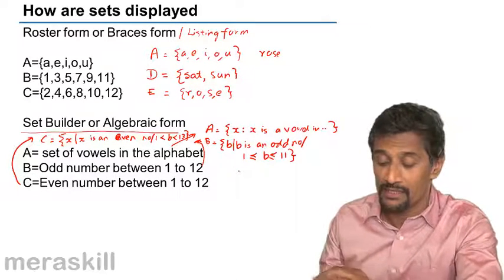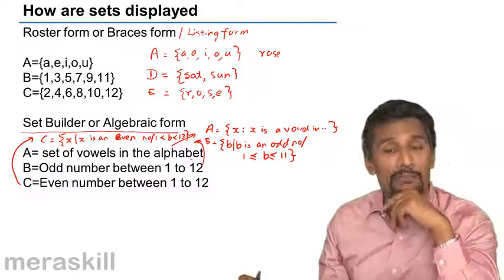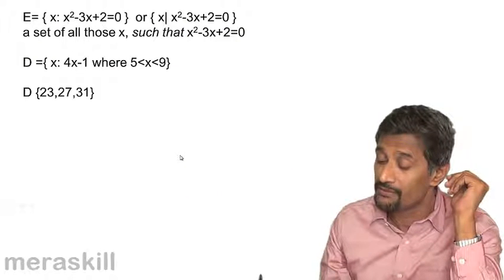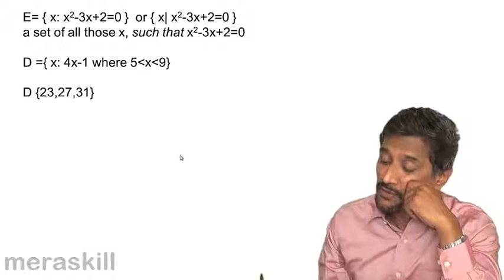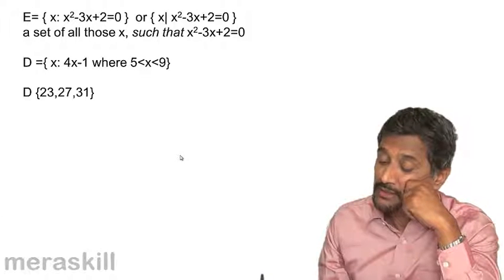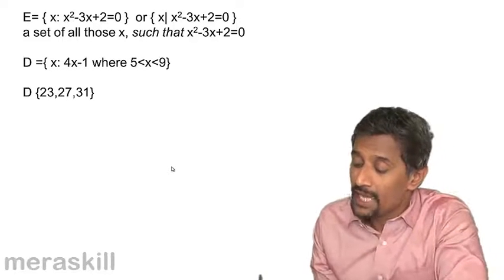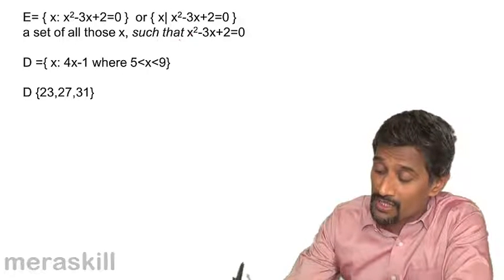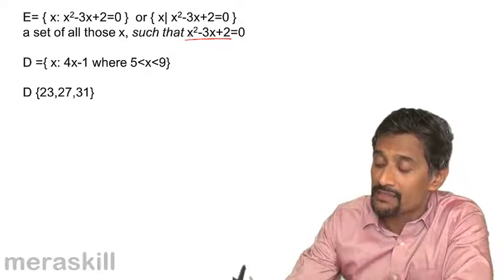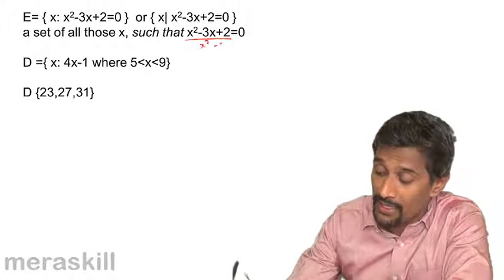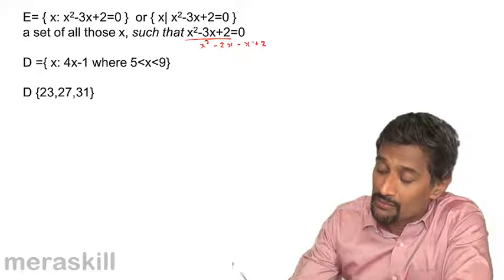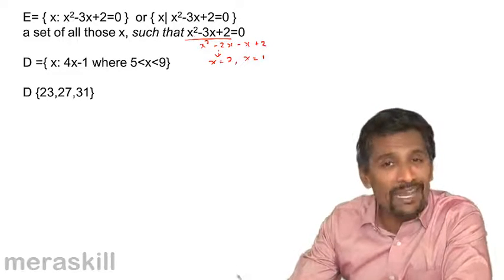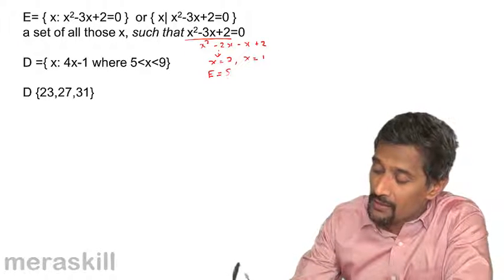So those are the two ways: the listing method and the set-builder or algebraic form. For example, E is the set of all X such that X² - 3X + 2 = 0. To find the elements, you solve the equation. Factoring gives X² - 2X - X + 2 = 0, which yields X = 2 or X = 1. So this set can be written in listing form as {2, 1}.